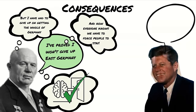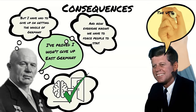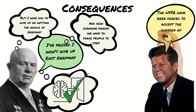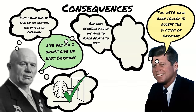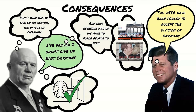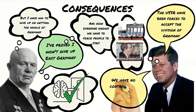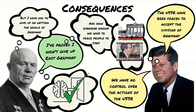For the USA, the wall showed them that the USSR had accepted the divide as permanent, and West Berlin became the symbol of freedom and democracy in the West, while the wall itself was seen as a symbol of communist repression and a violation of human rights. However, the wall had been built with no discussion with the West, and this showed the West they could not control the actions of the USSR.